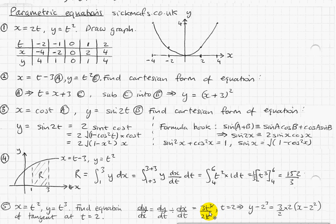you get 3 times... Remember, that's cancelled and that's cancelled, so you've only got 3t over 2. So, substituting t equals 2 gives you basically 6 over 2, which is basically 3. So, the gradient is 3.